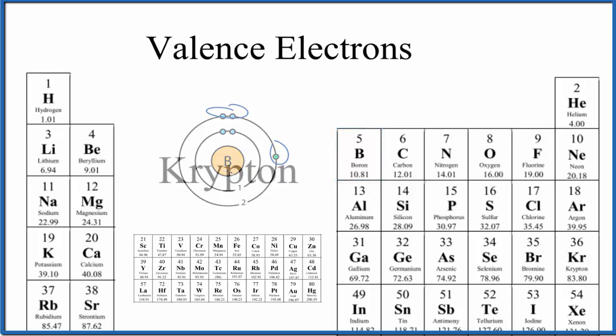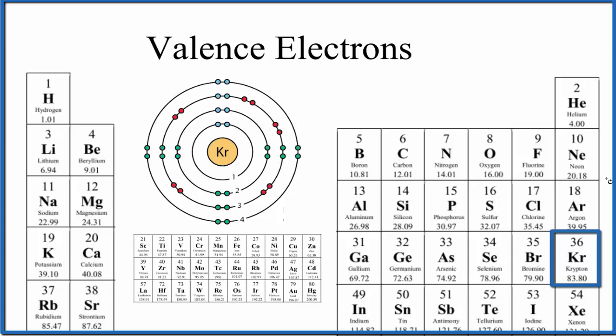Let's do one more. Krypton. Krypton is in group 18, sometimes called 8a, so it should have eight valence electrons. Two, four, six, eight.